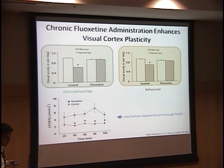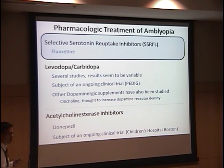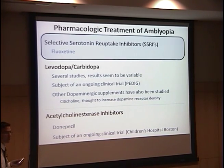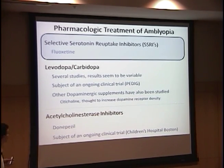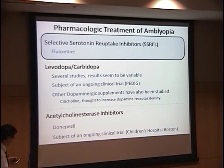They also looked specifically at GABA levels within the visual cortex and found that modulating these brainstem pathways indeed did change GABA levels within the visual cortex, so this mechanism appears to act through this inhibitory neurotransmitter. This is an exciting initial result because we do have SSRIs available, although their use is controversial in children and young adults, but this is a new area to think about.